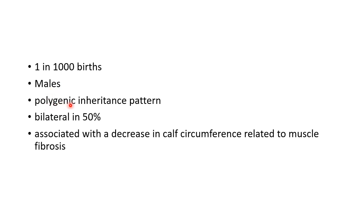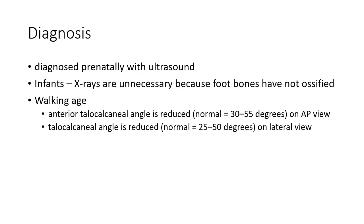It has a polygenic inheritance pattern. It is bilateral in 50% of cases. It is associated with a decrease in calf circumference, which is related to muscle fibrosis. Now let us see about the diagnosis of club foot.